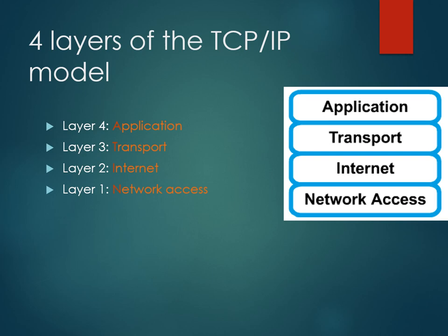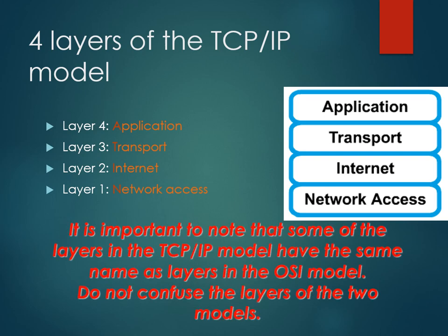In the TCP/IP model there are four layers. From top to bottom: the first layer is Network Access, second is Internet, third is the Transport layer, and fourth is the Application layer. It is important to note that some layers in the TCP/IP model have the same name as in the OSI reference model — do not confuse the layers of the two models.